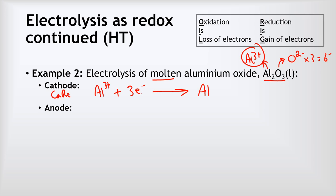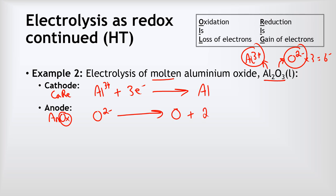At the anode, oxidation takes place — ANOX. The oxide O²⁻ ions go to the anode and we show oxidation with electrons on the right: O²⁻ → O + 2e⁻. More correctly, oxygen forms O2 molecules, so the balanced equation is: 2O²⁻ → O2 + 4e⁻. Again, the simpler form often gets full marks in a GCSE exam but the balanced version with O2 and four electrons is more correct.